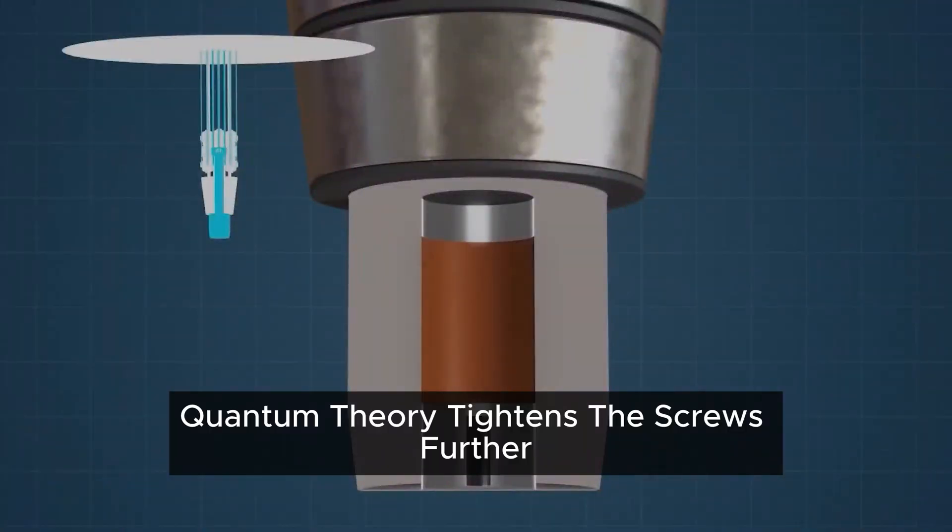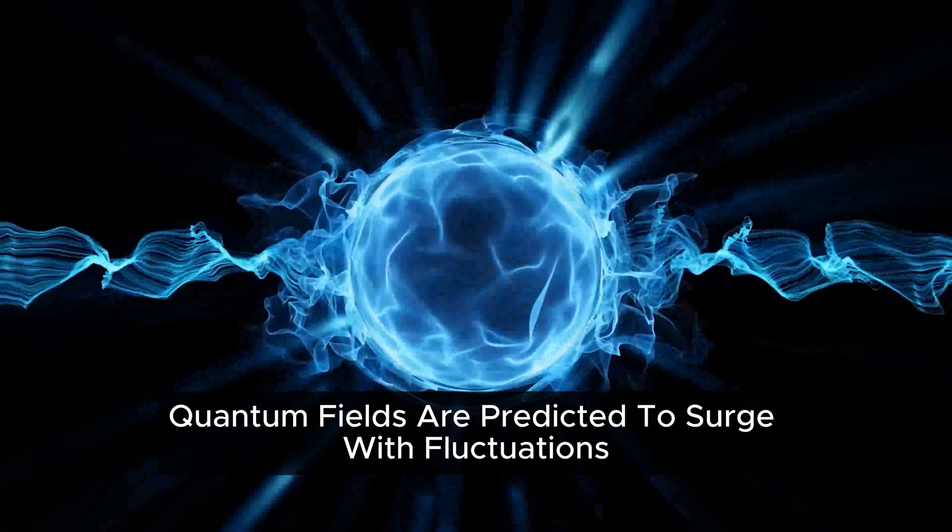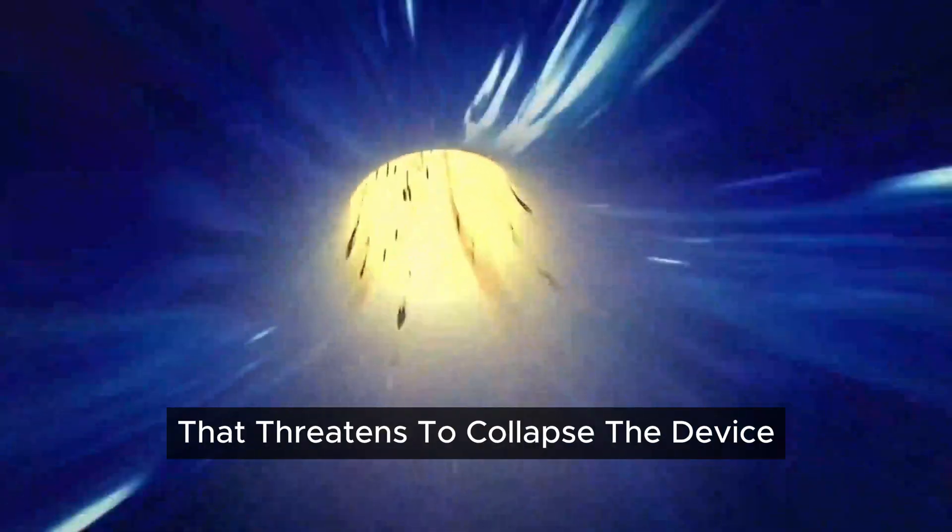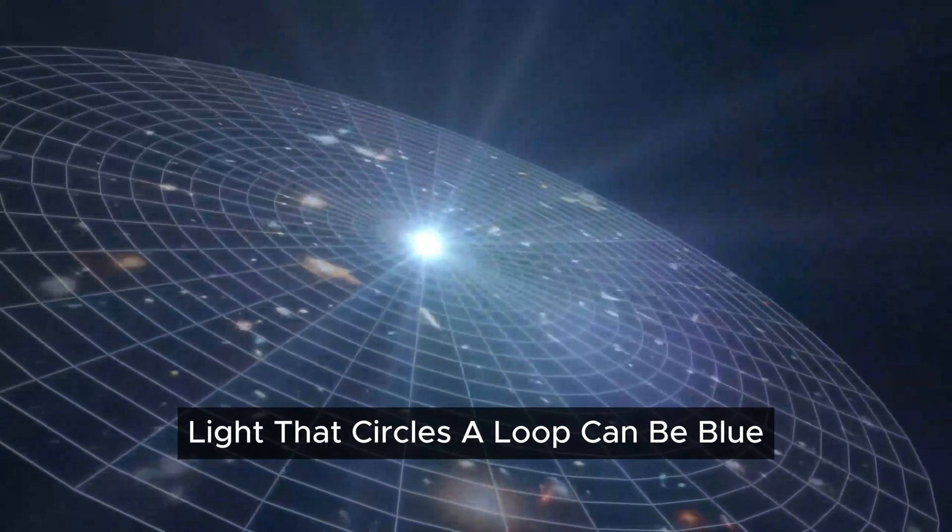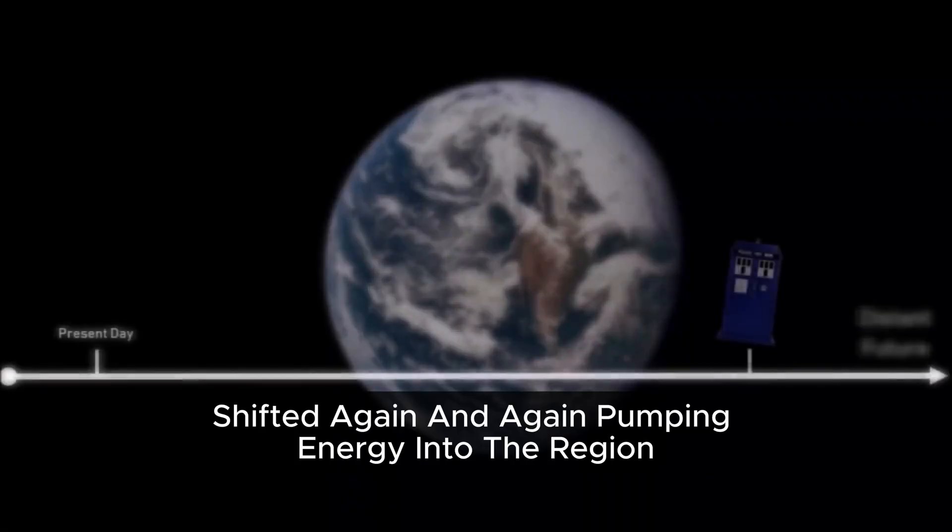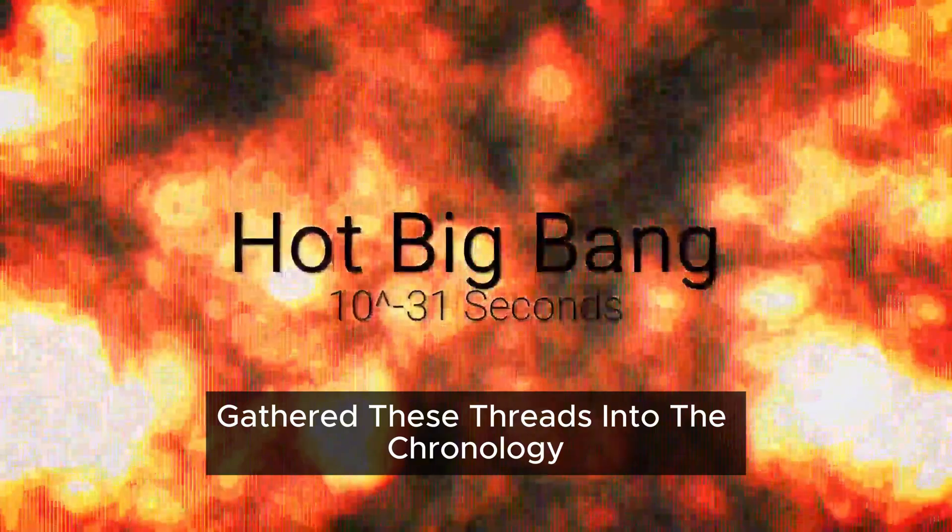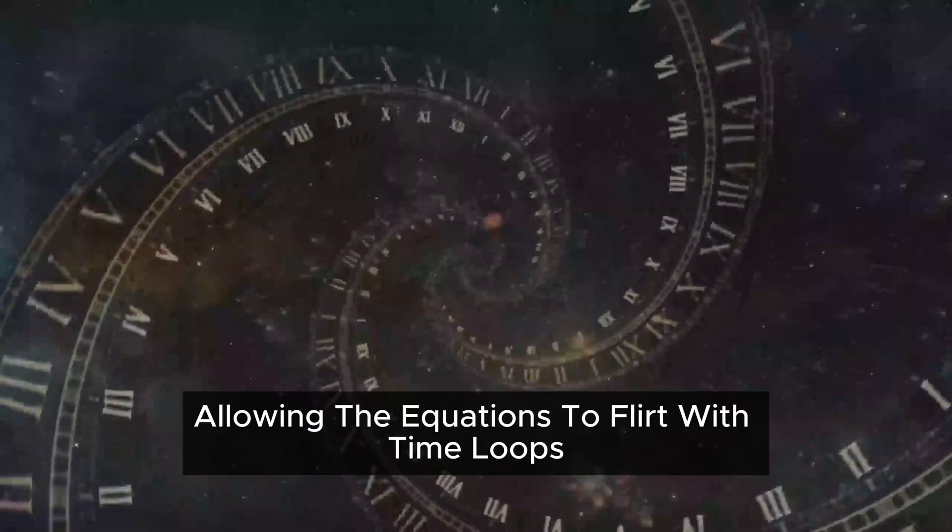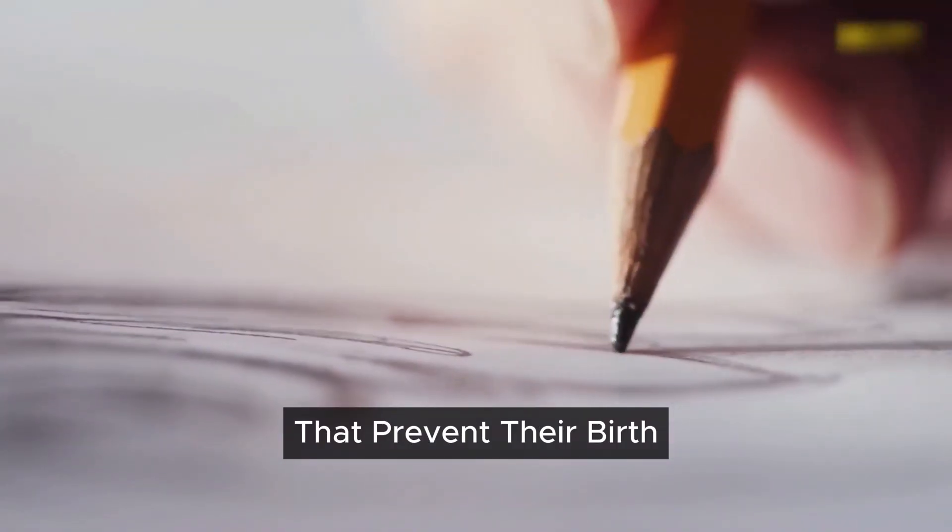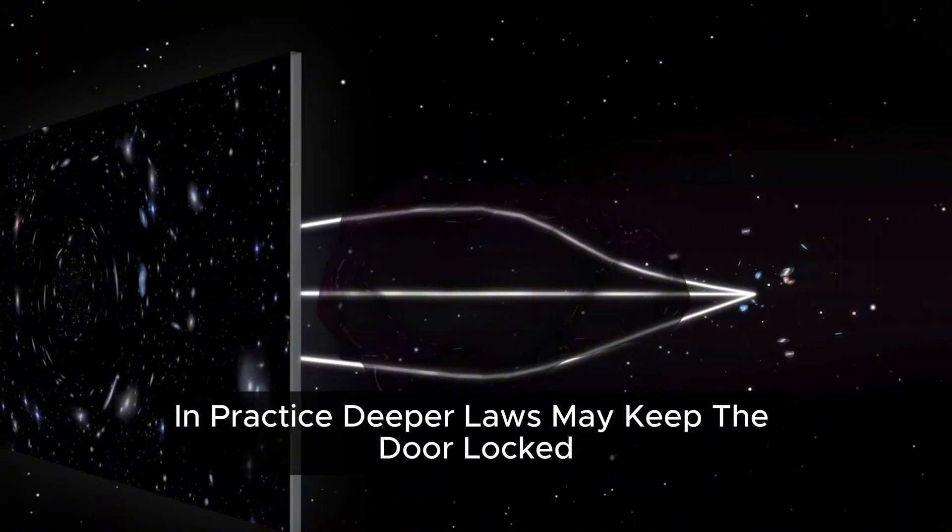Quantum theory tightens the screws further. Near the mouth of a would-be time machine, quantum fields are predicted to surge with fluctuations amplifying in a runaway feedback that threatens to collapse the device as soon as it approaches readiness. Light that circles a loop can be blue-shifted again and again, pumping energy into the region until the geometry gives way. Stephen Hawking gathered these threads into the chronology protection idea: the universe conspires to preserve cause and effect, allowing the equations to flirt with time loops while arranging physical processes that prevent their birth. On paper, the past can be reached. In practice, deeper laws may keep the door locked.